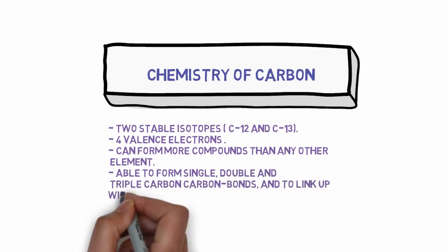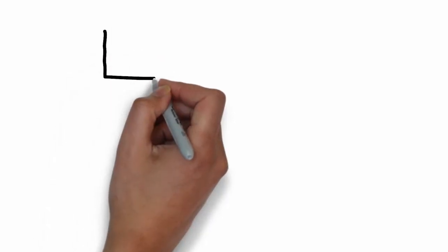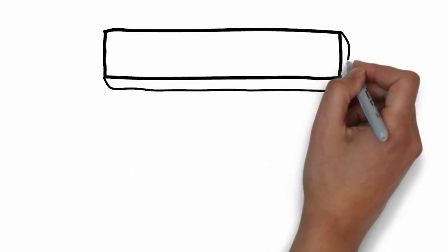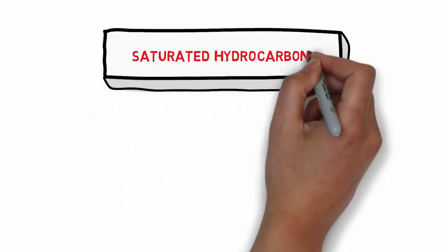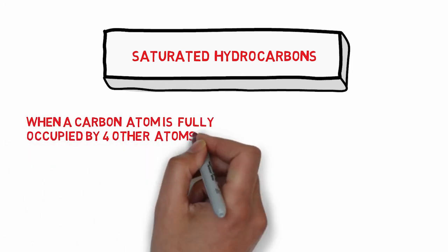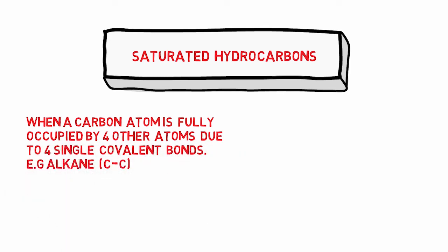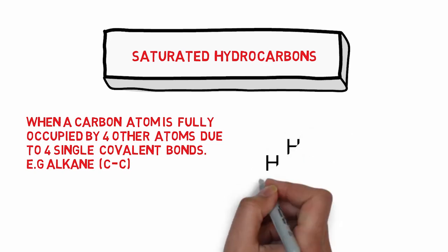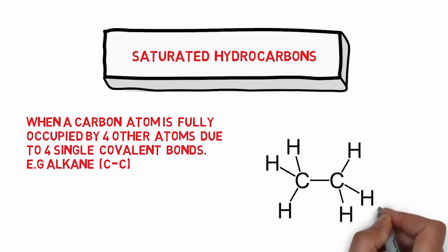Continuing with the classification of hydrocarbons, we have saturated hydrocarbons. A saturated hydrocarbon is one where a carbon atom is fully occupied by four other atoms due to four single covalent bonds — for example, alkanes, which have a carbon-carbon single bond. In the ethane molecule, carbon is utilizing all single bonds with the rest of the four atoms.